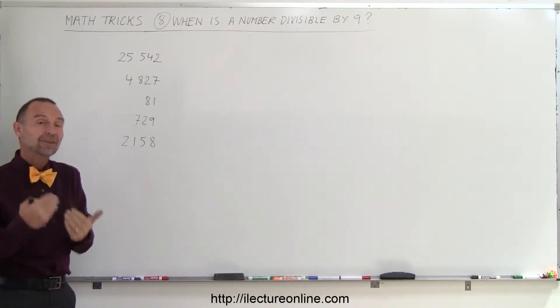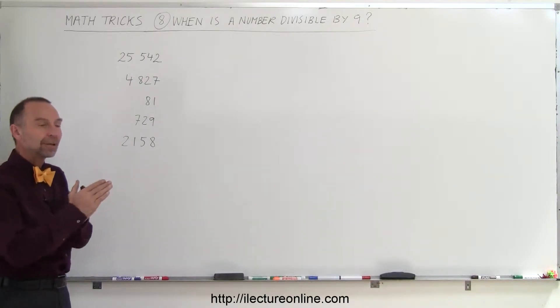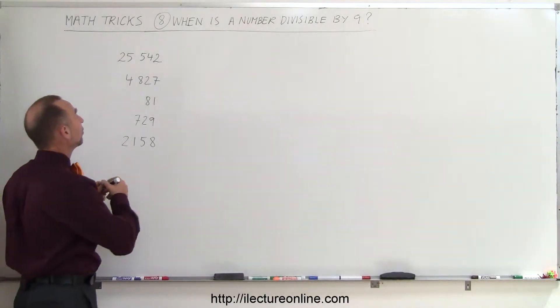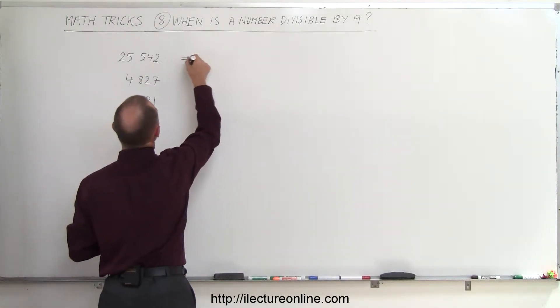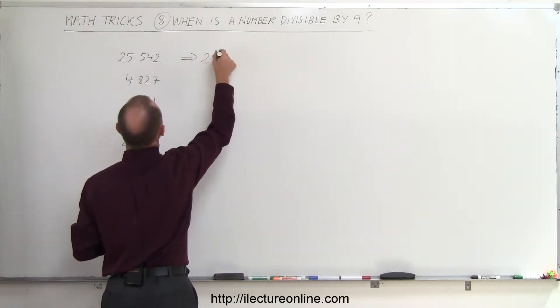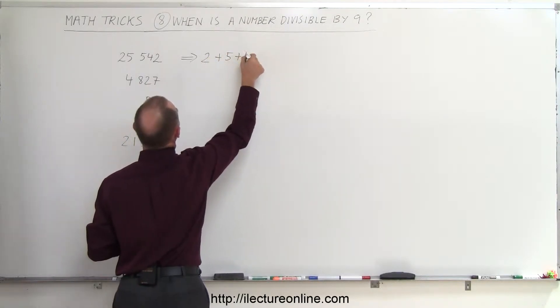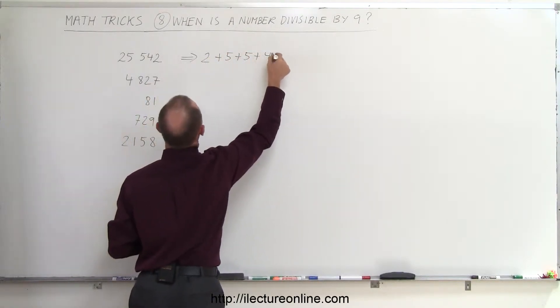You can even make it simpler than that. Any numbers that add up to 9, you can simply call it 0. So in this case, to see if this number is divisible by 9, we say it equals 2 plus 5 plus 5 plus 4 plus 2.